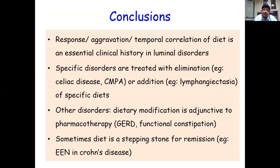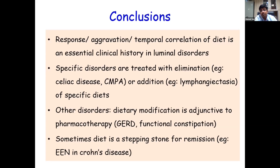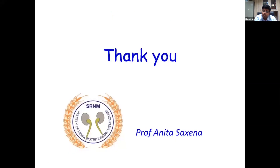In conclusion, when taking a clinical history for luminal disorders, look at the response, aggravation, and temporal correlation of diet with the course of the disease. Specific disorders are treated with dietary elimination — celiac disease, cow's milk protein allergy — or specific diets that change the disease course, like in lymphangiectasia. In other disorders like GERD and functional constipation, diet plays an adjunctive role alongside pharmacotherapy. Sometimes diet is a stepping stone to remission, as with enteral nutrition in Crohn's disease. Thanks to the Society of Renal Nutrition and Metabolism and Professor Anita Saxena for this scientific challenge.